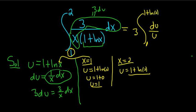Now we're ready to integrate. This integral is a familiar one. This is equal to 3 times natural log absolute value of u and we're going from 1 to 1 plus the natural log of 2.